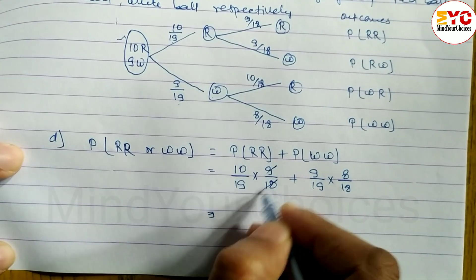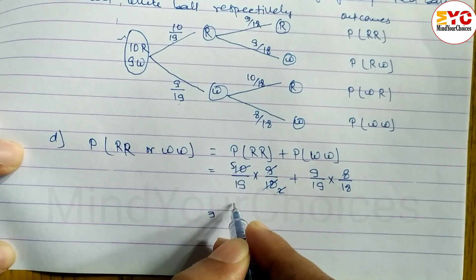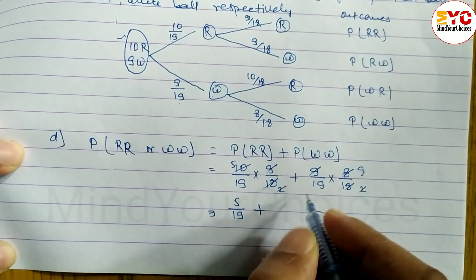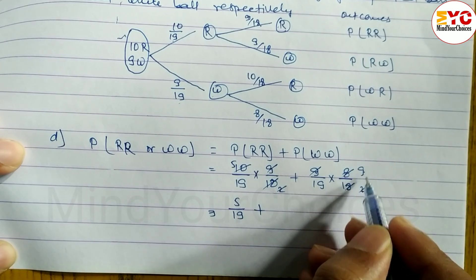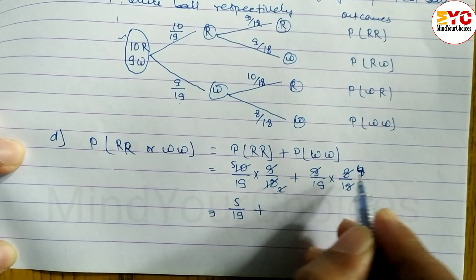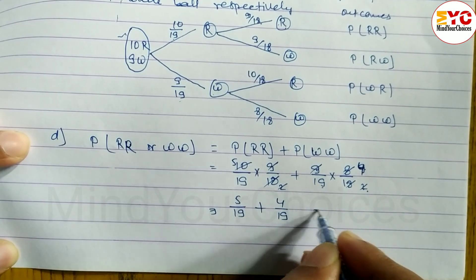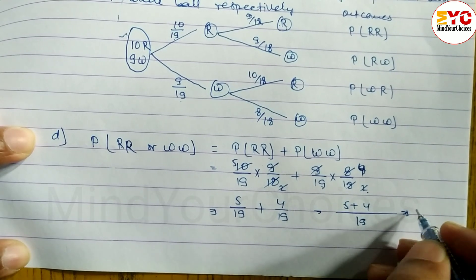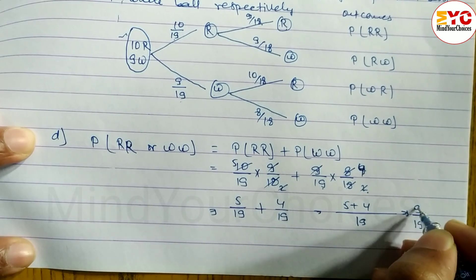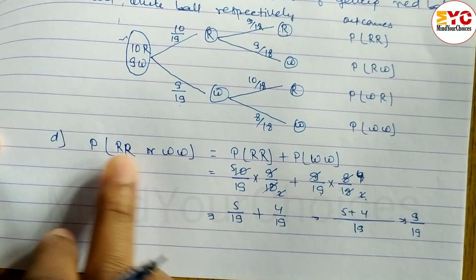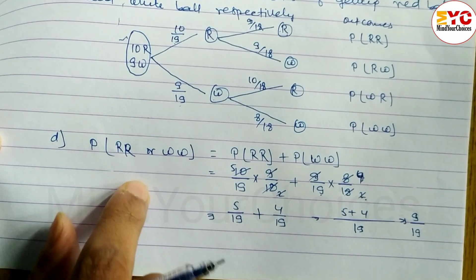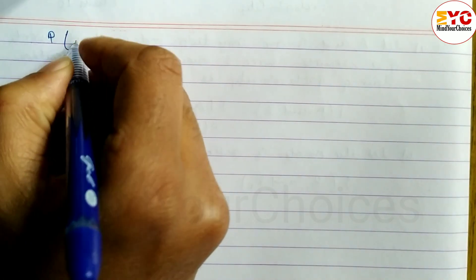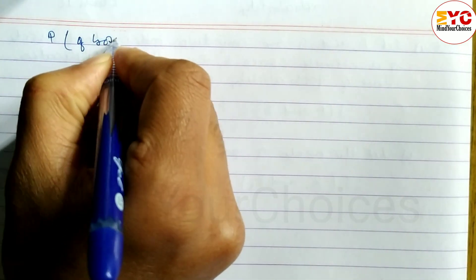Calculating P(same color): 10/19 into 9/18 simplifies to 5/19, and 9/19 into 8/18 simplifies to 4/19. So P(same color) = 5/19 plus 4/19 equals 9/19.